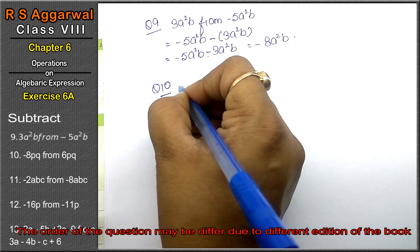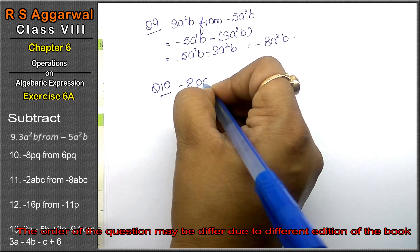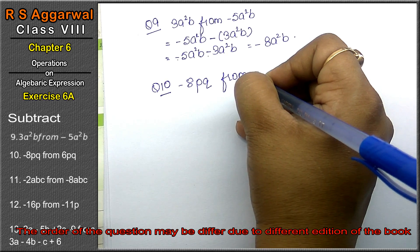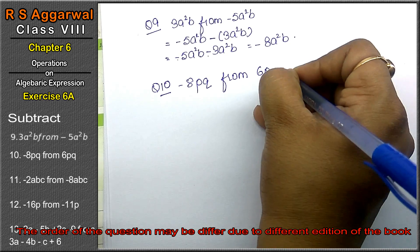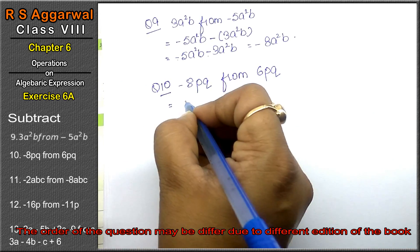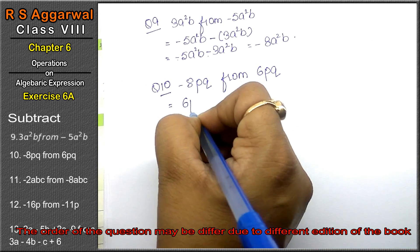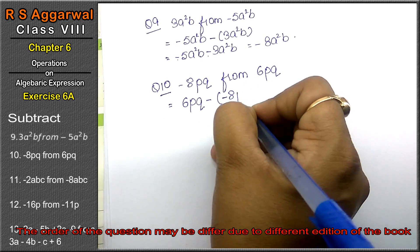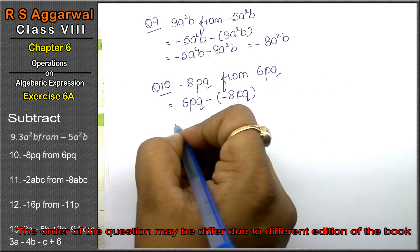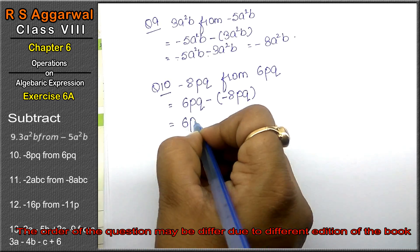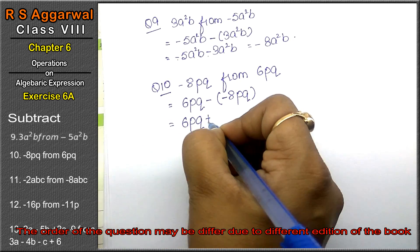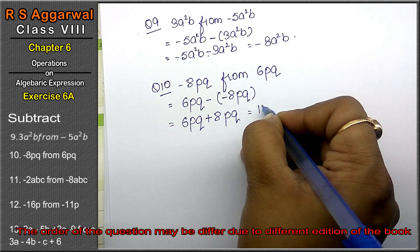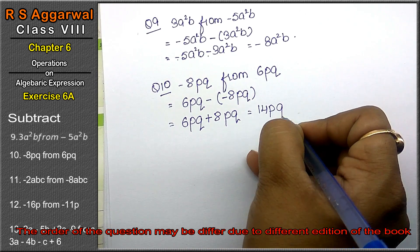Let's do question number 10 of Exercise 6A, algebraic expression. Question 10 is: subtract -8pq from 6pq. The digit after 'from' is written first: 6pq, then subtraction sign, then -8pq. So 6pq minus minus = plus 8pq, which gives 14pq is the answer.